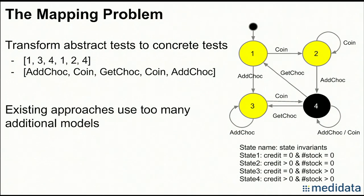The problem with previous research is that it uses many additional models, such as object diagrams, class diagrams, and use case diagrams, and these models have to be highly consistent — meaning parameters used in one model have to be identified in another model. In practice, it is really hard for testers to maintain these highly consistent relationships among models.